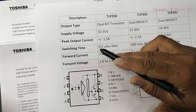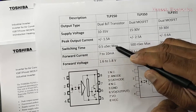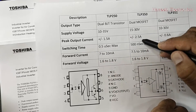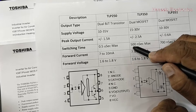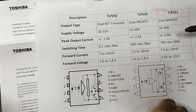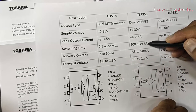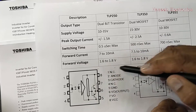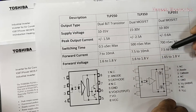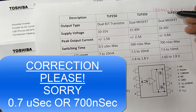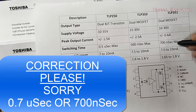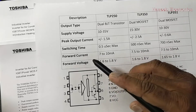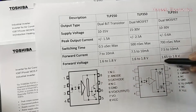Switching time — rise time and fall time: TLP250 is 0.5 microseconds maximum. TLP350 is also 0.5 microseconds (500 nanoseconds). Both have very fast switching speeds. TLP351 is 0.7 microseconds, so it is slightly slower.